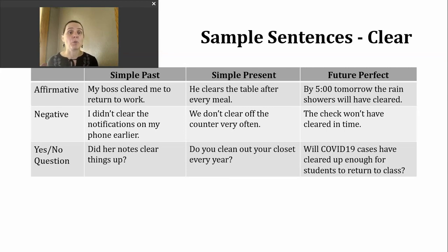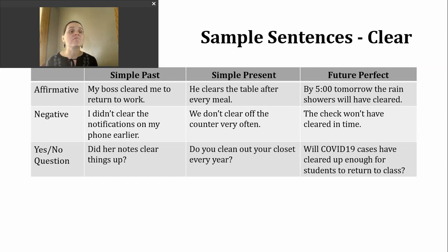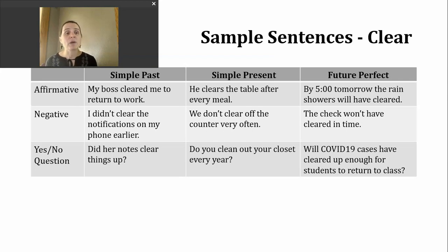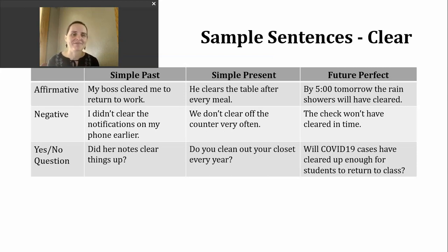Next, let's look at simple present. In the affirmative, this verb changes based on the subject. If the subject is he, she, or it, we need to add an S to the base verb. But if the subject is I, you, or they, the verb stays in its base form. For example: "He clears the table after every meal." For a negative sentence in simple present, use "does not" or "do not" plus the base verb — native speakers often use the contractions "don't" or "doesn't." Example: "We don't clear off the counter very often." For a yes-or-no question, start with "do," then the subject, then the base verb: "Do you clean out your closet every year?"